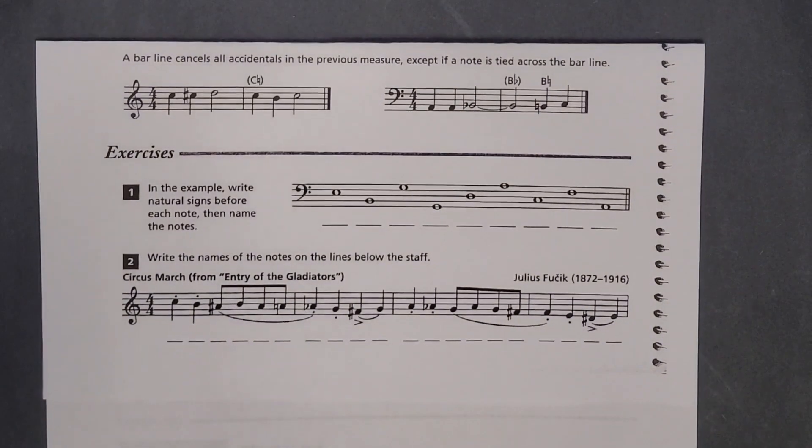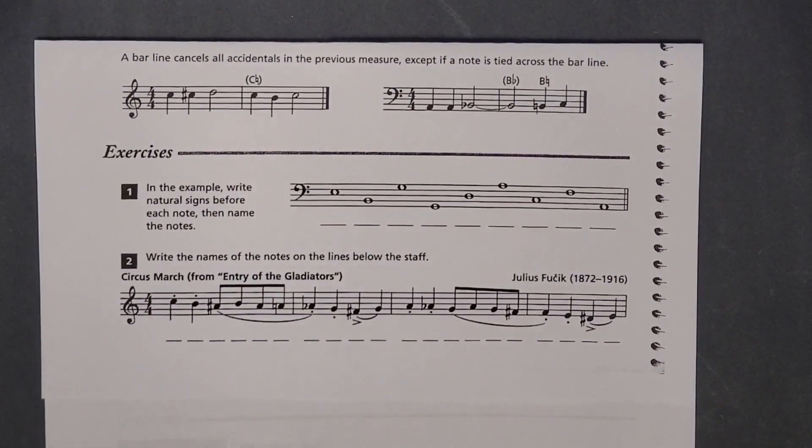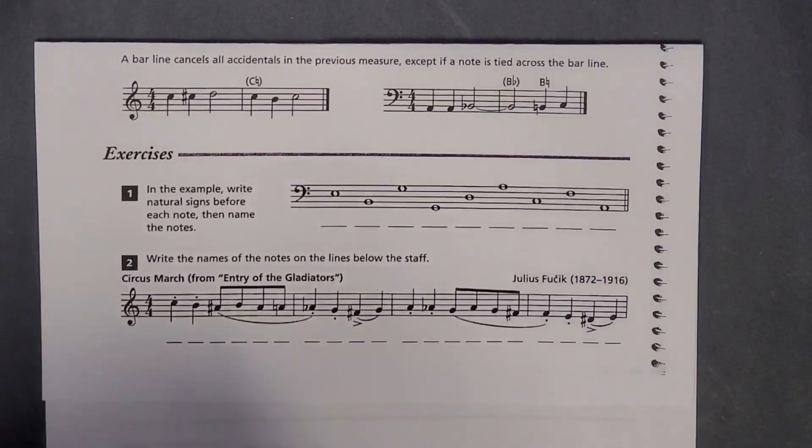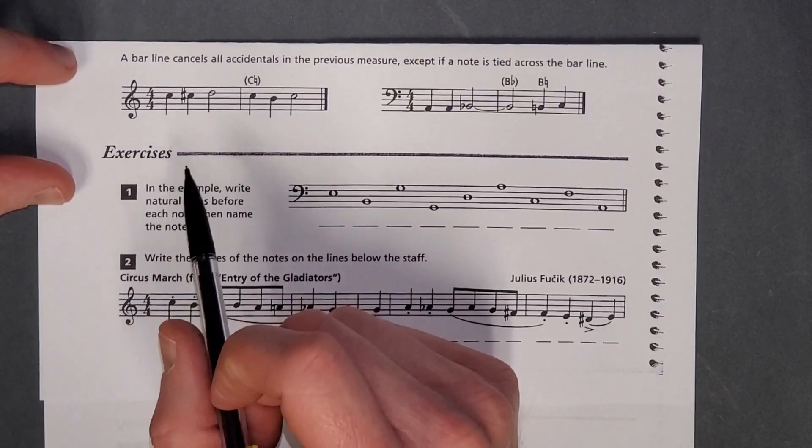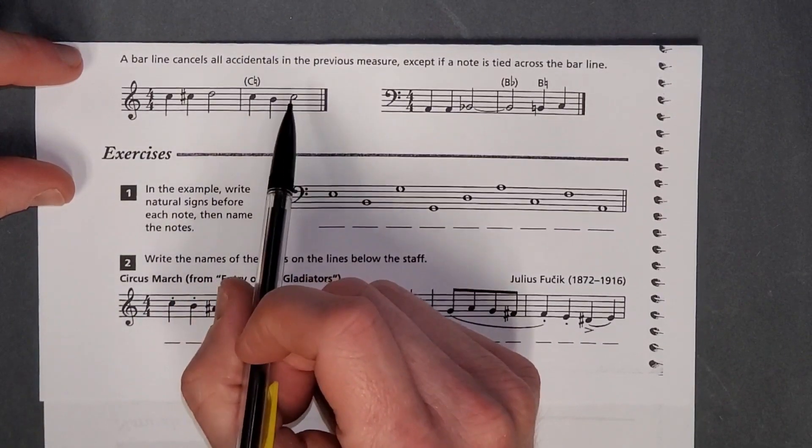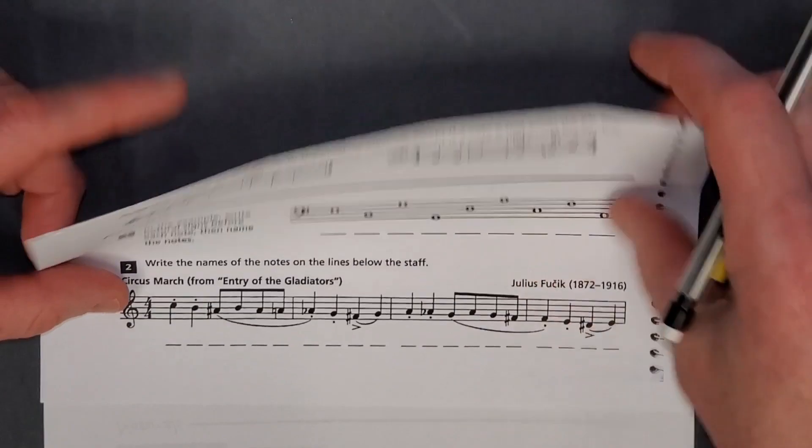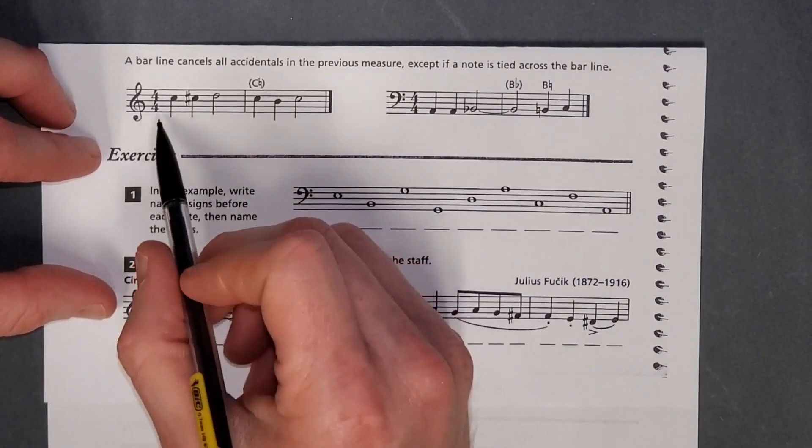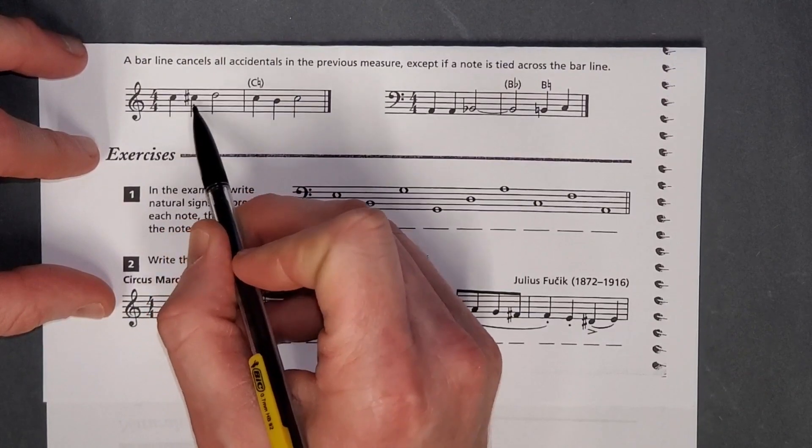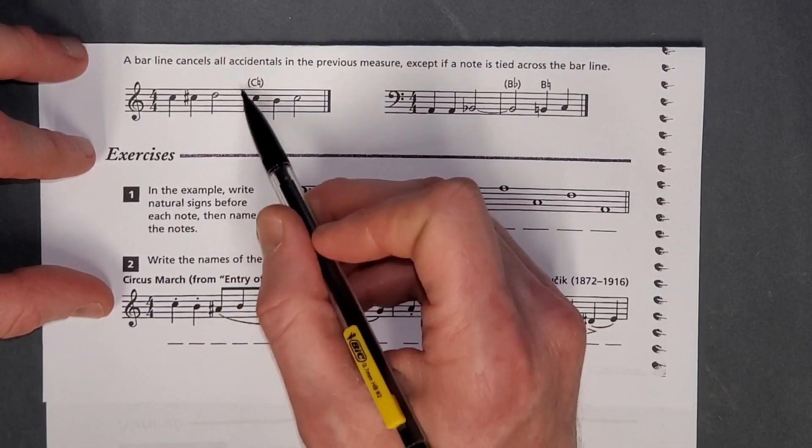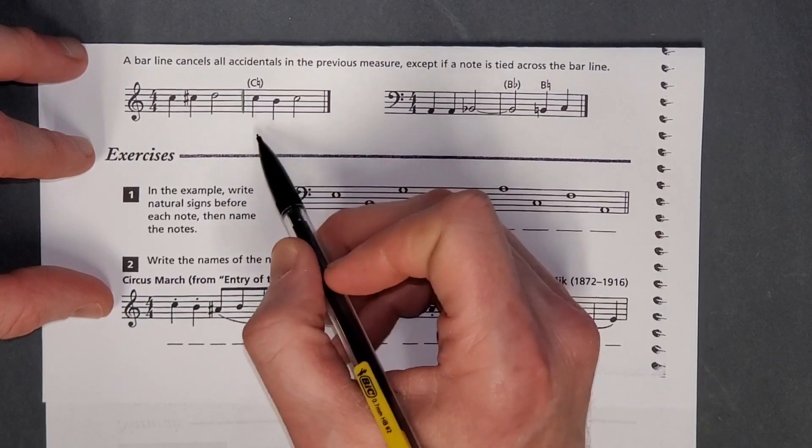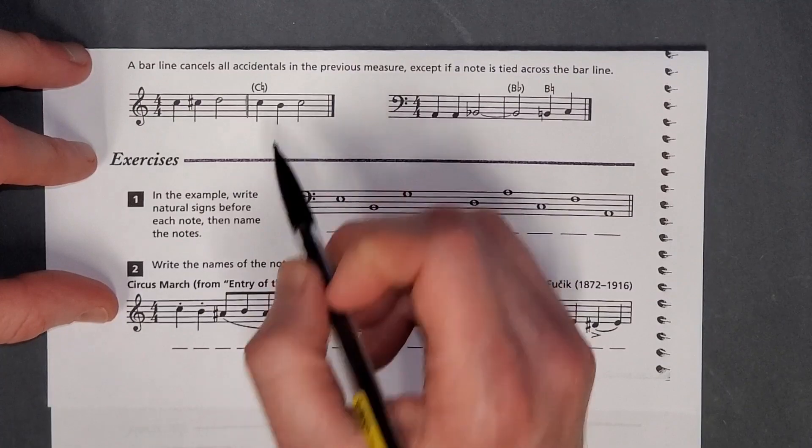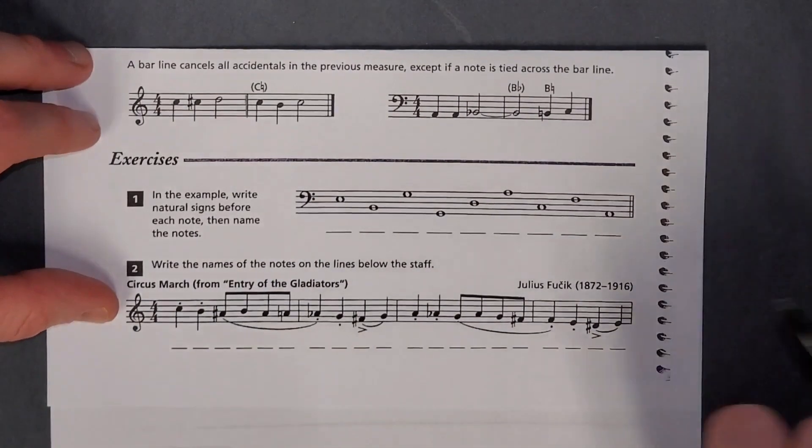A bar line cancels all accidentals in the previous measure, except if a note is tied across the bar line. So I already actually mentioned that in the previous setting, I was jumping ahead a little bit. So yeah, basically what that says here is like C, then you've got a C sharp up to a D. And then this bar drops here. And now it starts over and that's going to be a C natural again. So accidentals are only good for one measure.